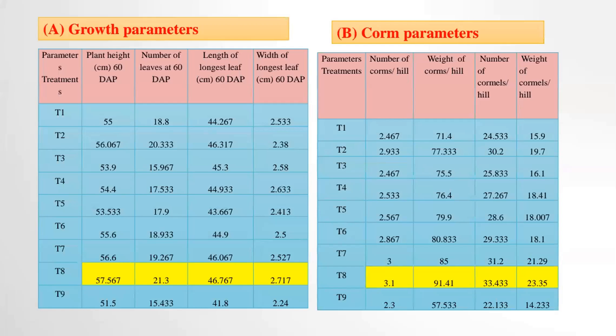These are the results from the field. For growth parameters, maximum plant height at 60 days of planting, length of the longest leaf, and width of the longest leaf — all gave good results in treatment T8.